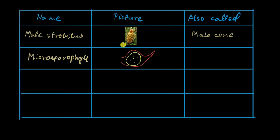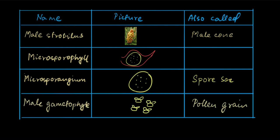Inside the microsporophyll there is this yellow round structure which is the microsporangium. It's also called spore sac. Inside the microsporangium are these spores, which when they mature form the male gametophytes, also called the pollen grains.